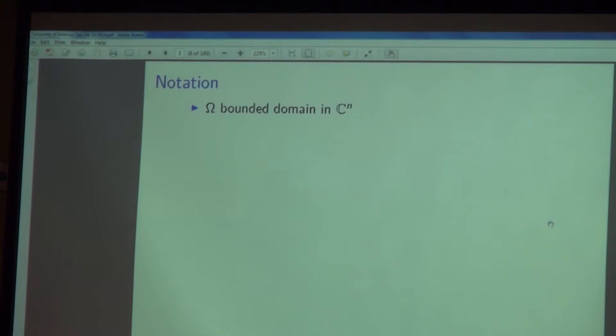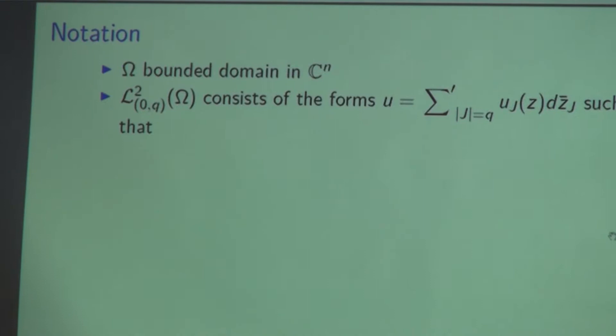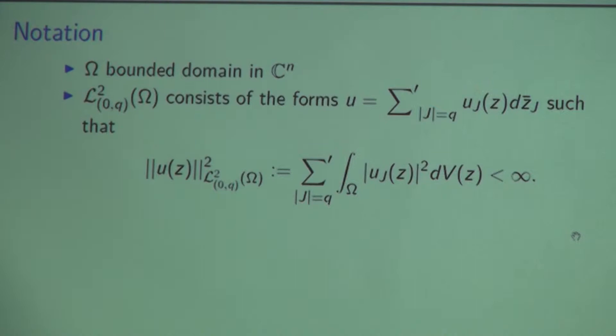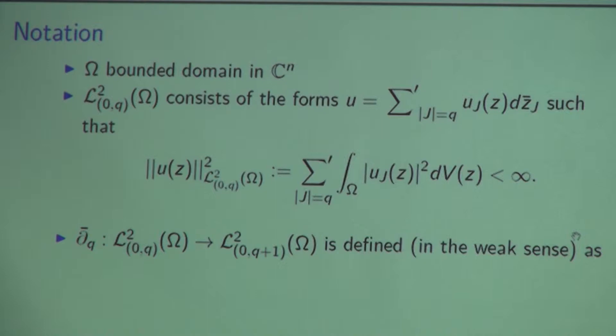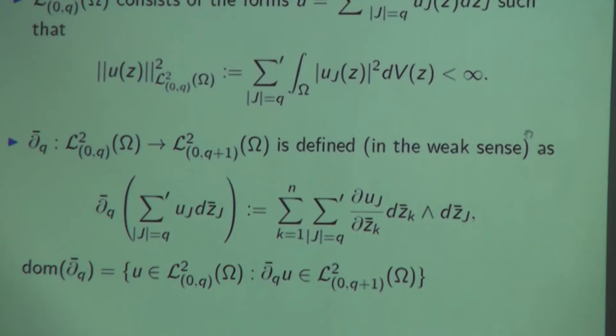In my talk, omega is always a bounded domain in C^n. We consider the L^2 (0,q)-forms on omega — those forms written in strictly increasing Q-tuples which have square-integrable components. We introduce the classical D-bar operator, defining it so that we can later understand the twisted operator that McNeal introduced. The D-bar operator takes the z_k-bar derivatives of the components u_J and wedges z_k-bar with the existing J wedge products. The domain of D-bar consists of those (0,q)-forms in L^2 whose D-bar is in square-integrable (0,q+1)-forms.